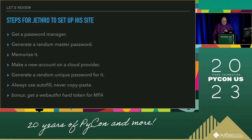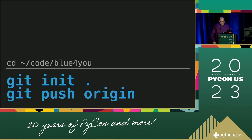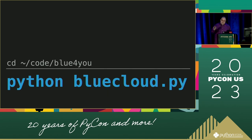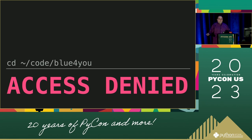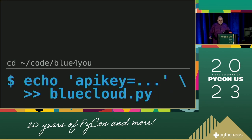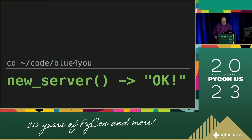Jetro learned his lesson. He gets a password manager, generates and memorizes his master password. Time for code. He gets his repo set up, starts hacking on some code, gets the development kit from his cloud provider, and tries to boot the server with the Python API. But the cloud SDK can't read his web browser's mind, so it can't authenticate. He looks in the docs for authentication, and the examples from his provider all show the secret being pasted into the code. So he logs onto the site, grabs the API key off the security page, sticks it into his code, and pastes it. The server works. Pushing the code is a breeze. The site's live — Blue4U is in business.